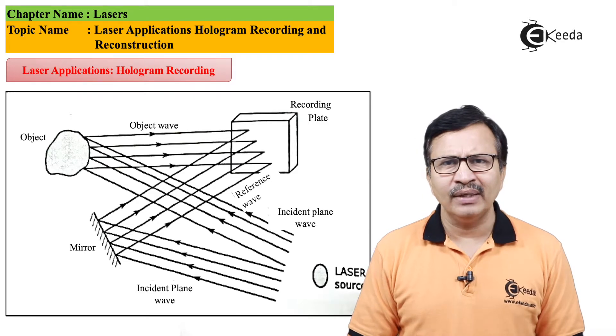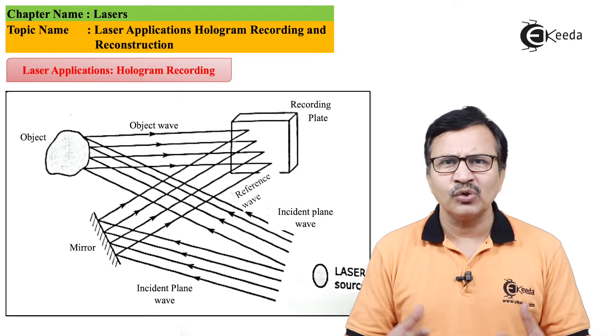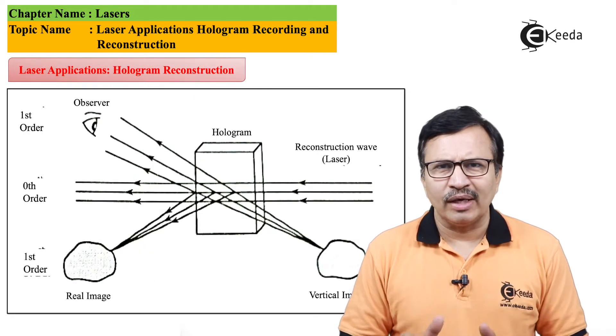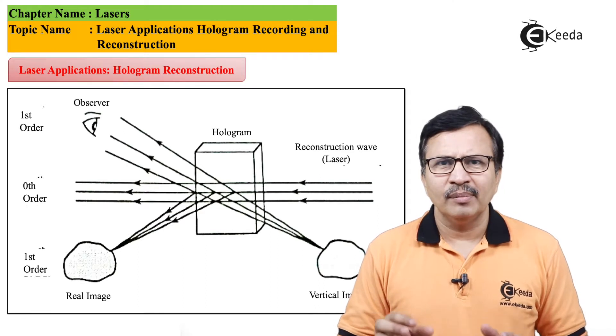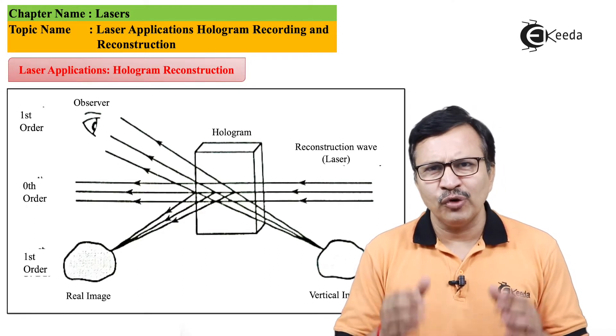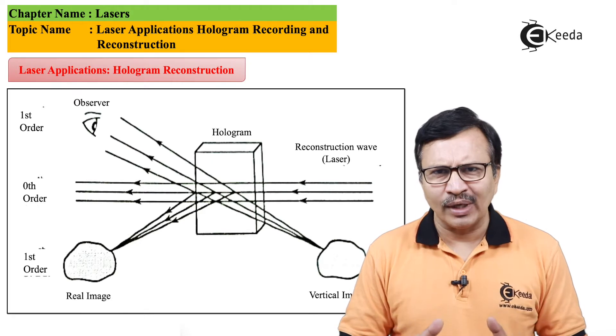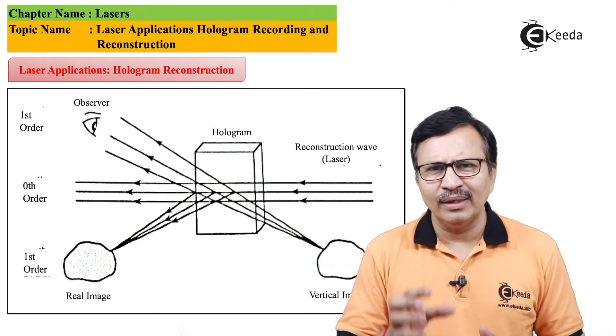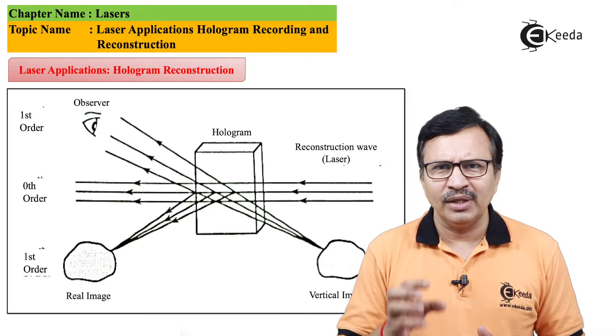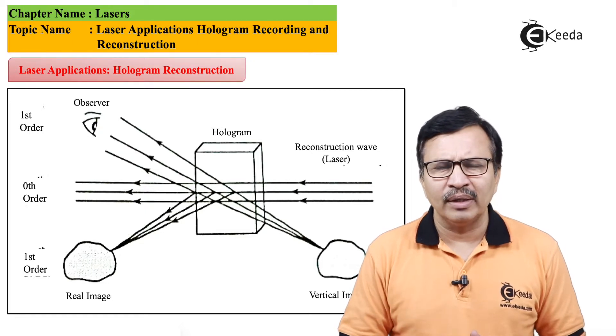In the second part, we deal with how to read this hologram. The second part of holography is the reconstruction. So for the reconstruction of the hologram, we use the same wavelength of light that was used for the recording purpose.